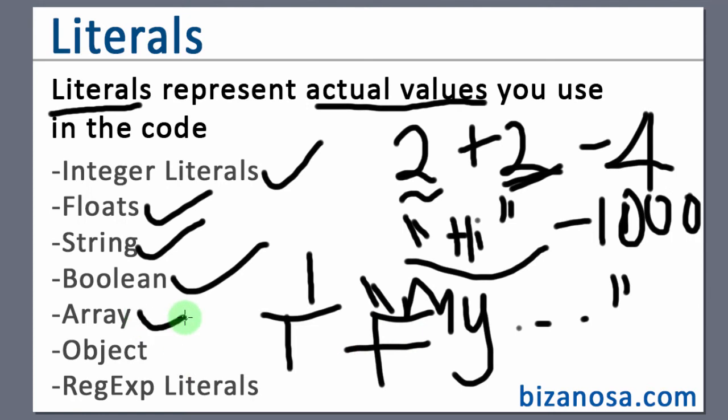Then we have arrays and array literal. This one has a group of elements. Different elements can be numbers.